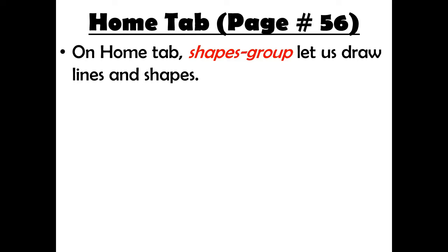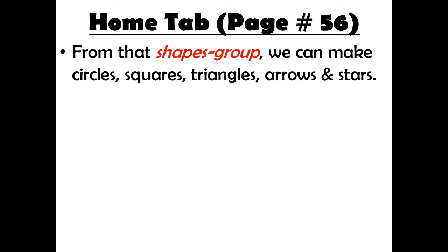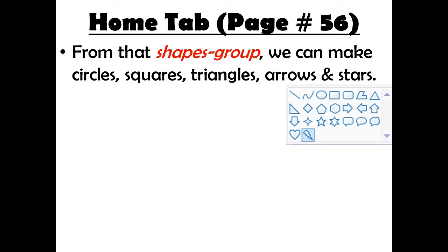On the Home tab, the Shapes group lets us draw lines and different shapes. The ribbon has two tabs — Home and View. We are on the Home tab. The Shapes group is highlighted with a red box. There are many shapes available: circles, squares, triangles, arrows, left/right/up/down arrows, stars, and many other shapes.